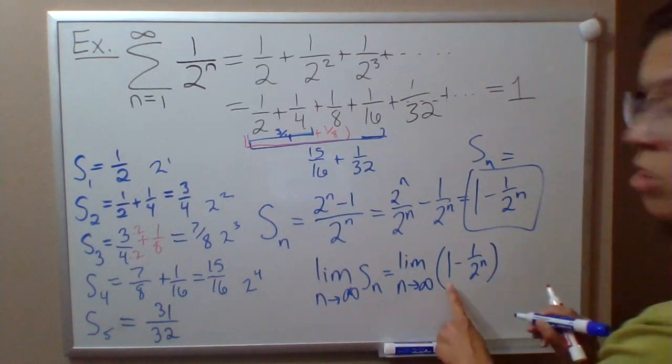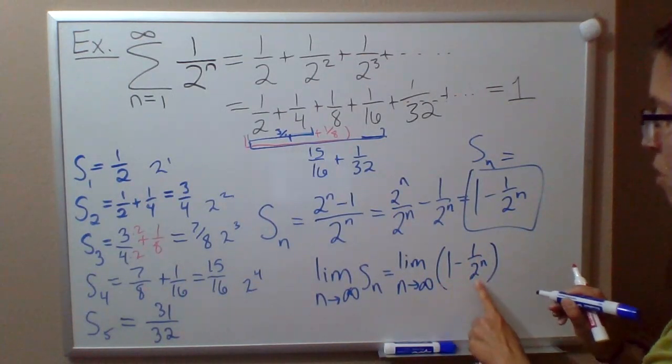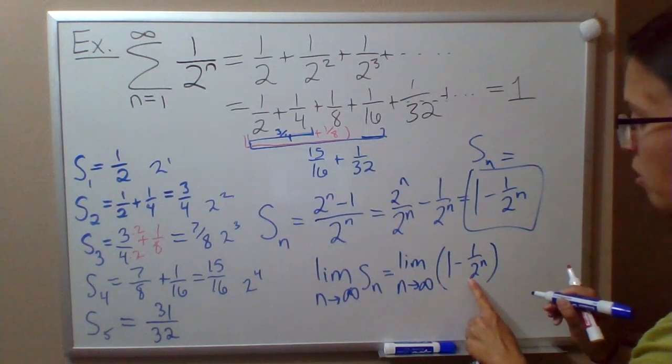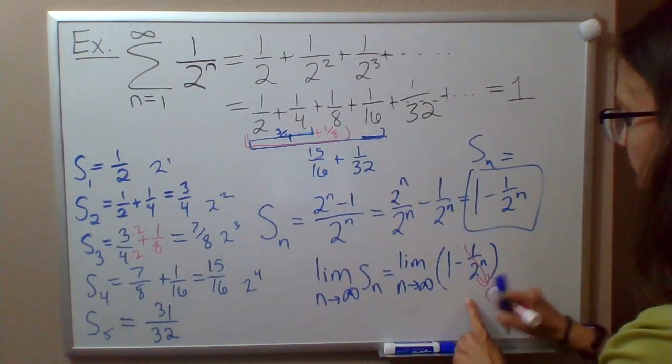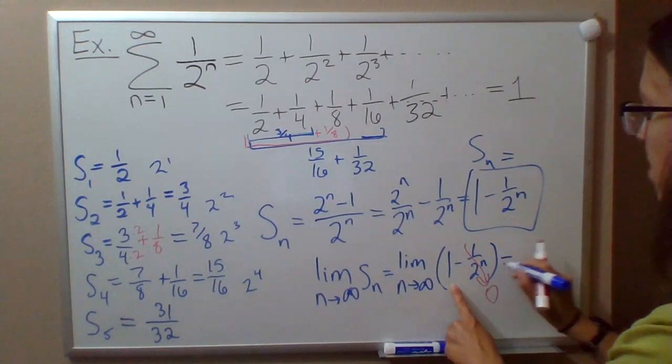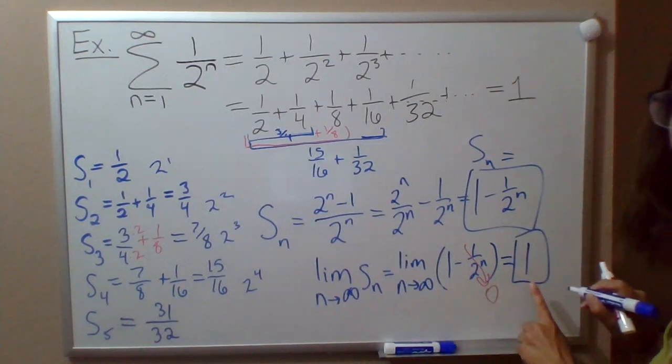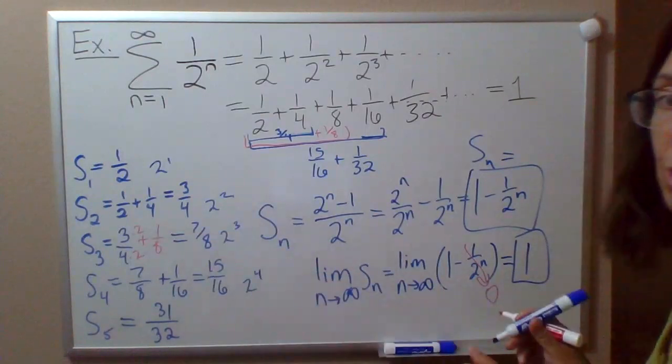Which is 1 minus, this will be 1 over infinity—it has the form 1 over infinity, so this is approaching 0 as n approaches infinity. And so we're approaching 1 minus 0, and so the sum really is 1.